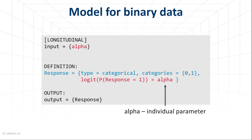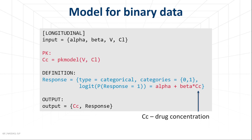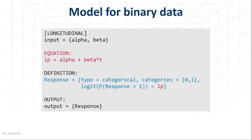As for continuous models, parameters used in the model will be estimated if they are listed in the input line. The probability can depend on time — remember that t is a keyword in MLxtran for time. It can also depend on regressor values taken from the dataset, or on drug concentration in a joint PK-categorical model. For clarity, you can also write the formulas in the equation block, outside the definition block.